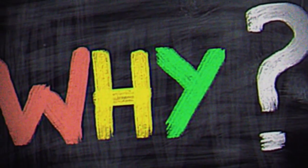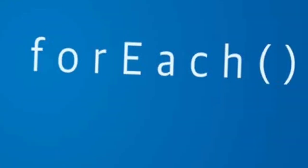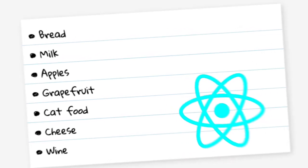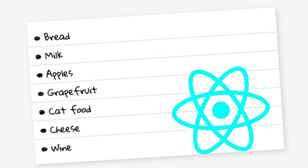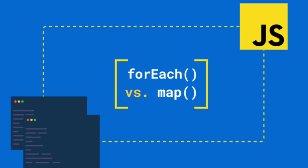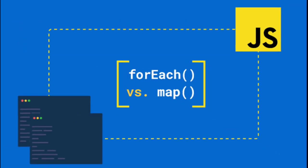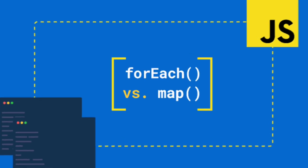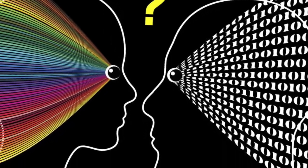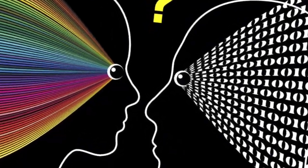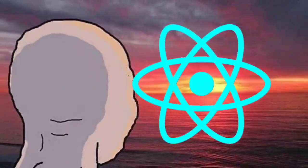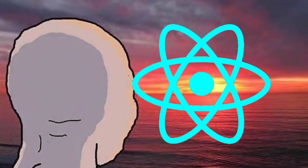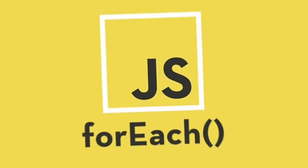Why do we often prefer using map over forEach when rendering lists in a React component? Both map and forEach are array methods in JavaScript, but they behave differently, especially when working with React components.